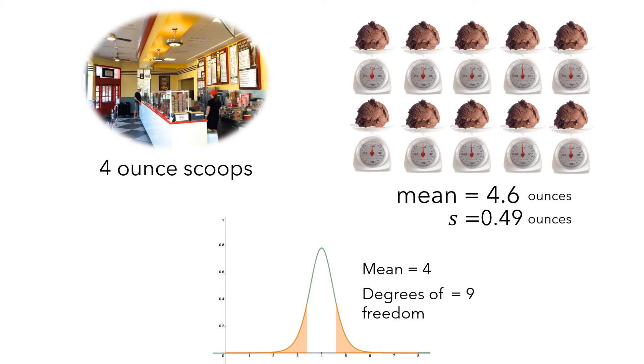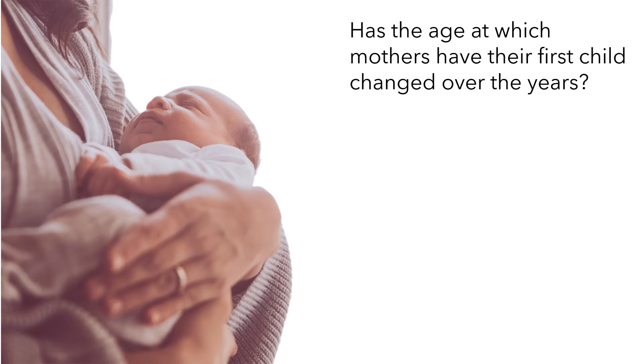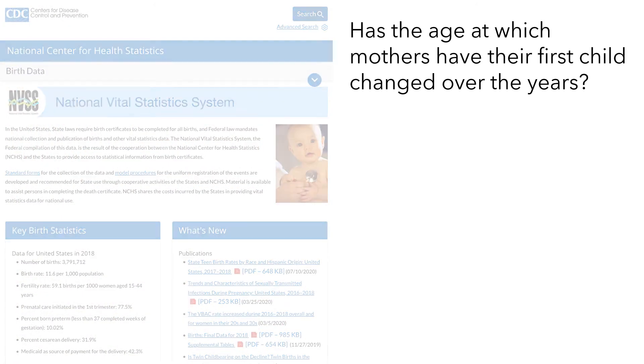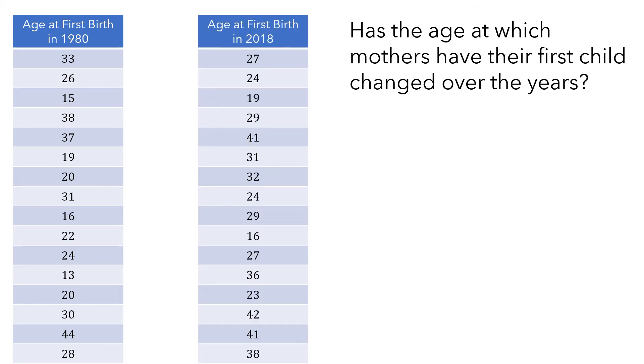Let's look at another example. Let's say you want to know, has the age at which mothers have their first child changed over the years? To answer this question, you access a database and find data from 150 mothers recorded in 1980, and data from 250 mothers recorded in 2018.